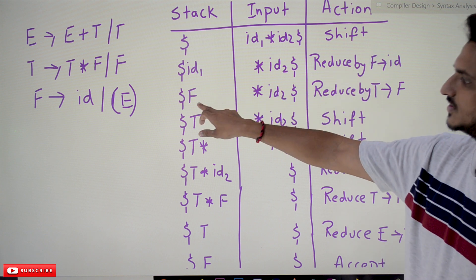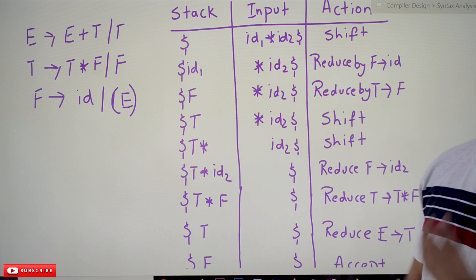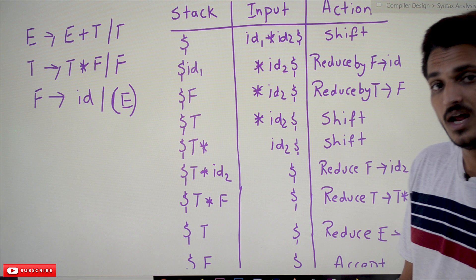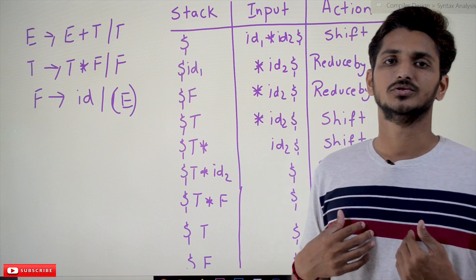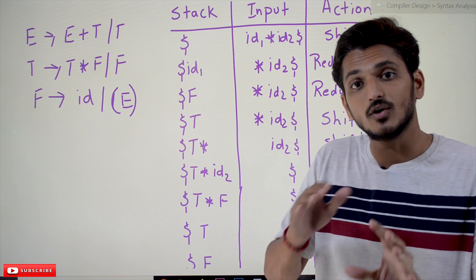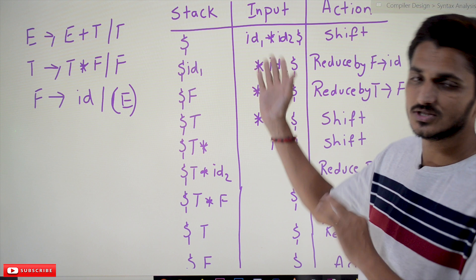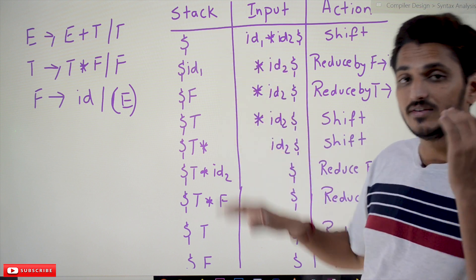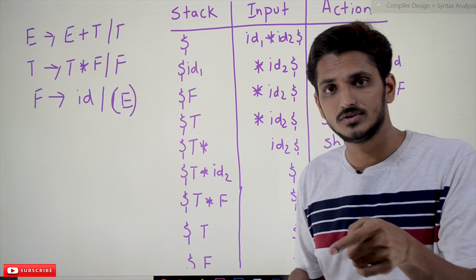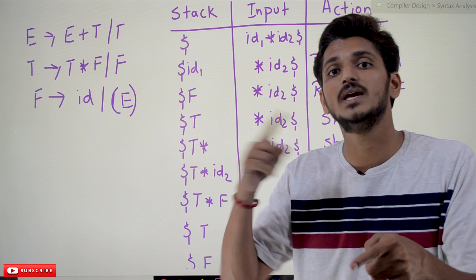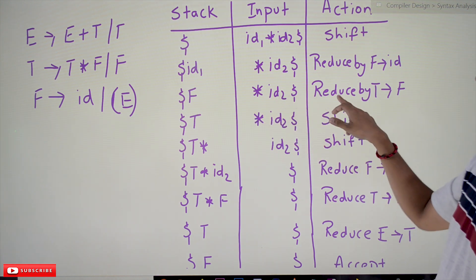Now reduce: the production F → id is matching, so id1 is reduced to F. Pop id1 from the stack and place F onto the stack — that is what the reduce operation means. Most will have the question: when do we shift and when do we reduce? You will get clarity on this in our coming classes. For now, try to understand how the shift-reduce technique identifies whether the given string is accepted or not.